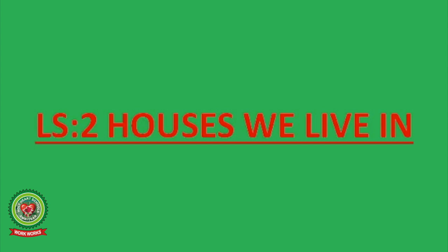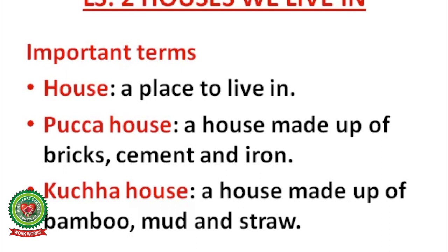The objective of today's topic is to know the different types of houses. First, I would like to tell you the important terms on page 10. Number 1: House — a place to live in. Number 2: Pakka House — a house made up of bricks, cement and iron. Number 3: Kaccha House — a house made up of bamboo, mud and straw.